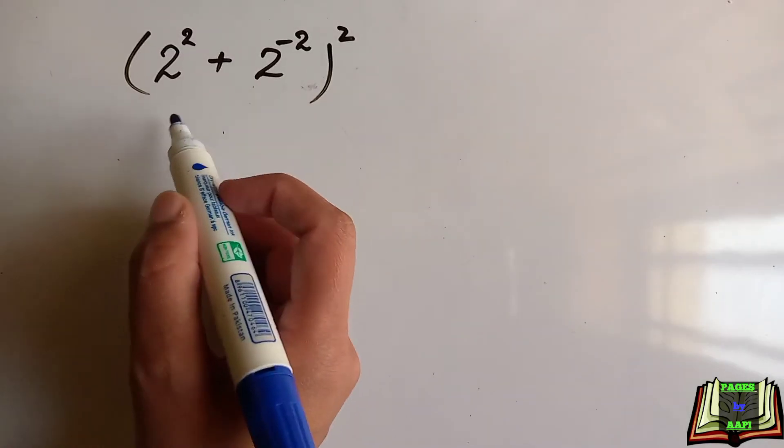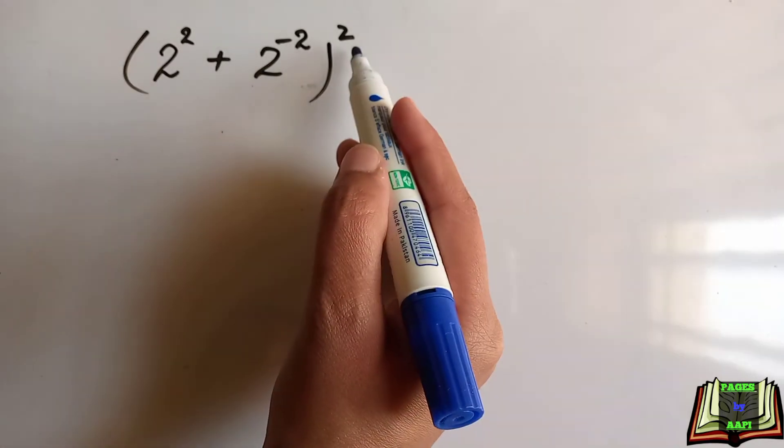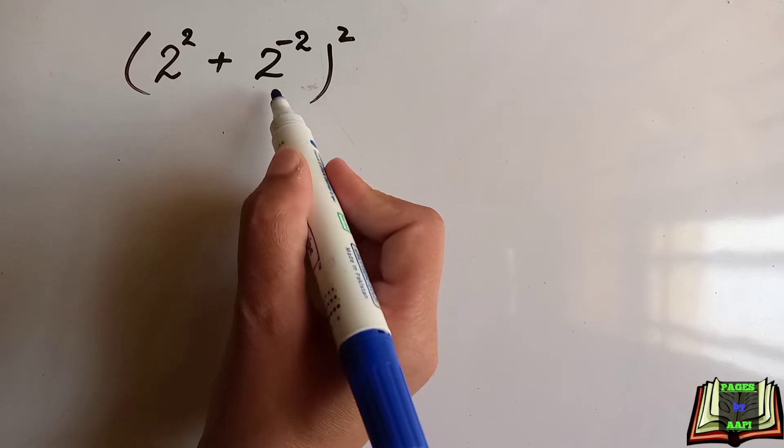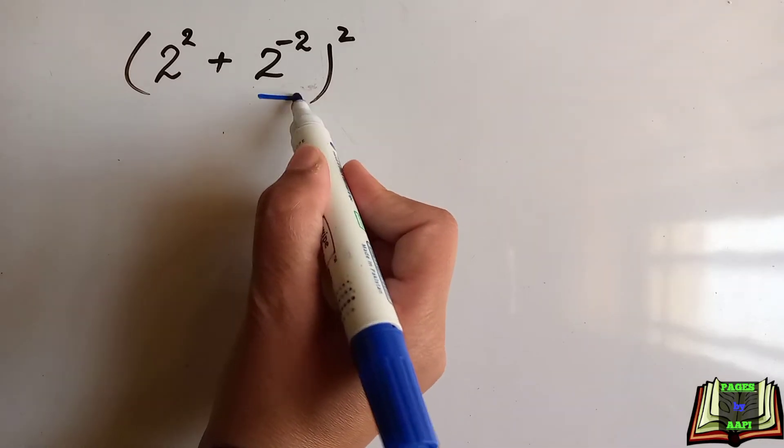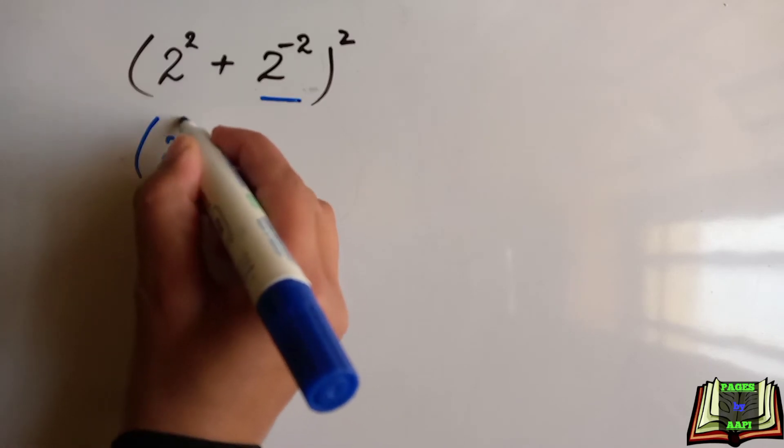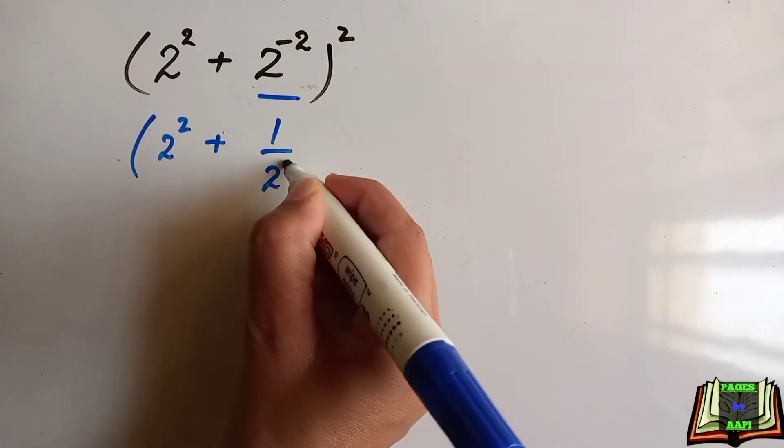The question is: 2 to the power 2 plus 2 to the power minus 2, whole to the power 2. We can simplify this first. We'll write this as it is, and this 2 to the power minus 2 can be written as 1 over 2 to the power positive 2, whole to the power 2.